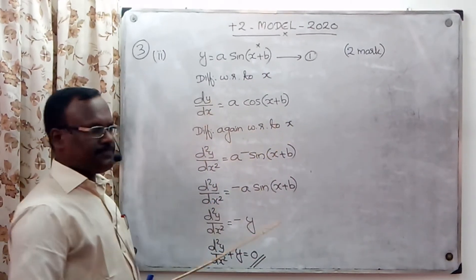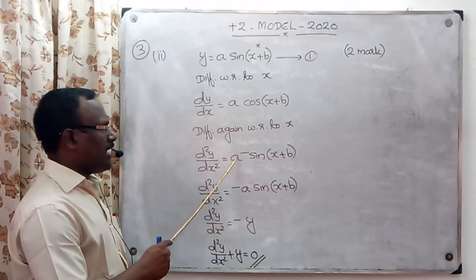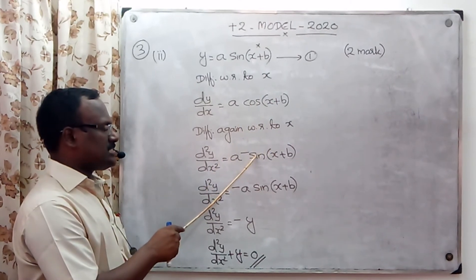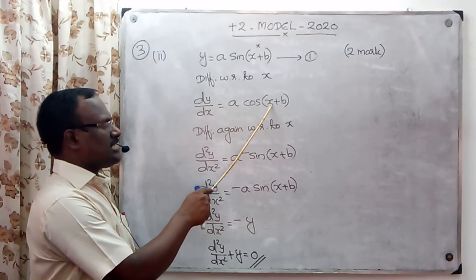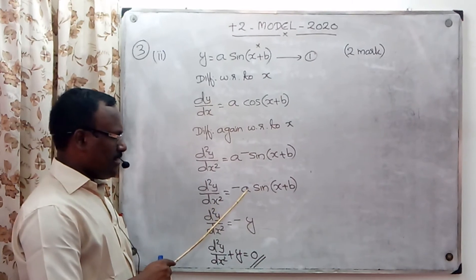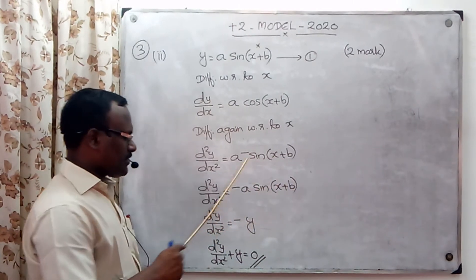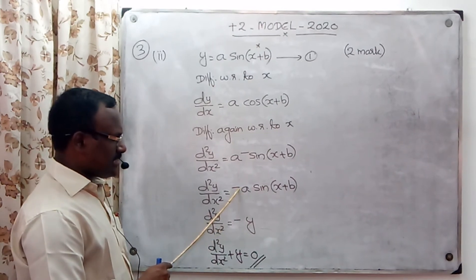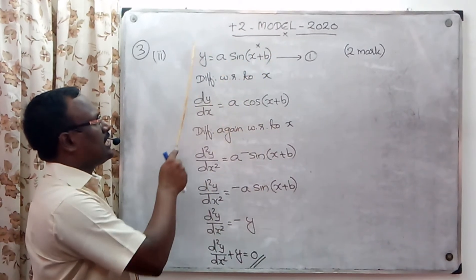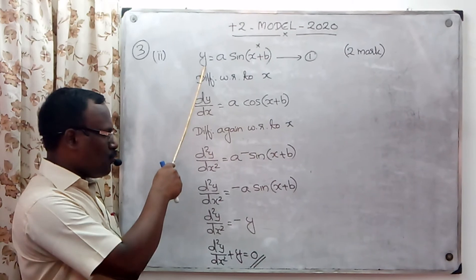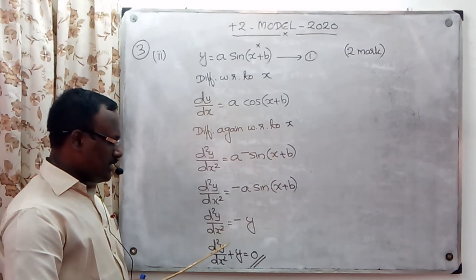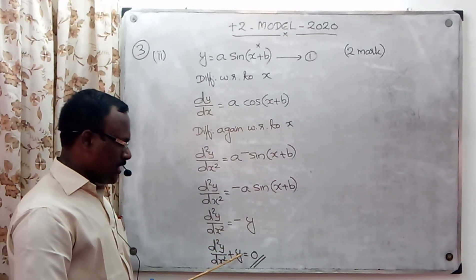Differentiating again with respect to x: d²y/dx² is equal to a times the derivative of cos(x+b), which gives minus a·sin(x+b). So d²y/dx² equals negative a·sin(x+b).